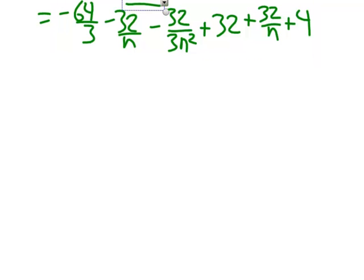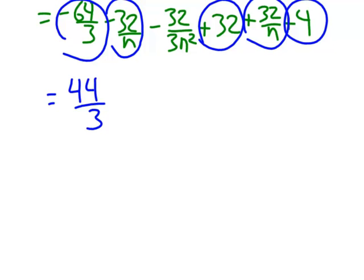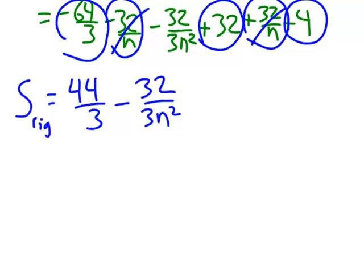Now combining like terms — starting with constants, since the n terms appear in denominators: negative 64/3 plus 32 plus 4 gives 44/3. The over-n terms, minus 32/n and plus 32/n, happen to cancel out. Finally we have minus 32 over 3n squared remaining. So our right-hand sum equals 44/3 minus 32 over 3n².